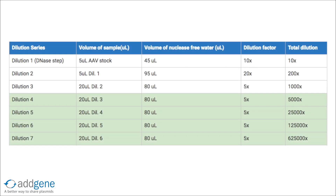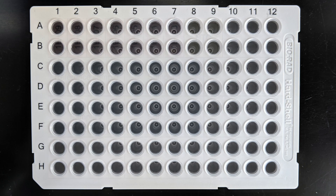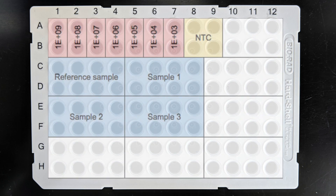For most AAV samples, loading dilutions 4 to 7 of our dilution scheme onto your qPCR plate works well. However, if you have samples with a relatively low titer or high titer, you may want to load a different set of dilutions.